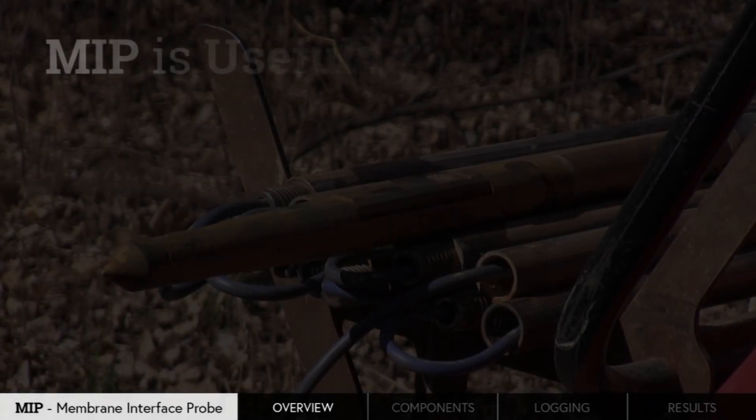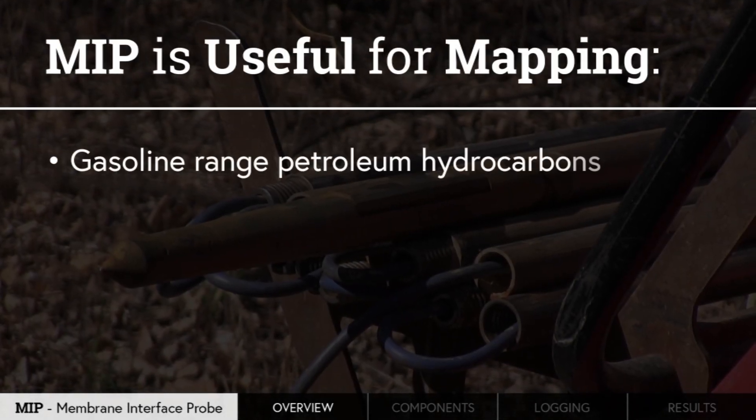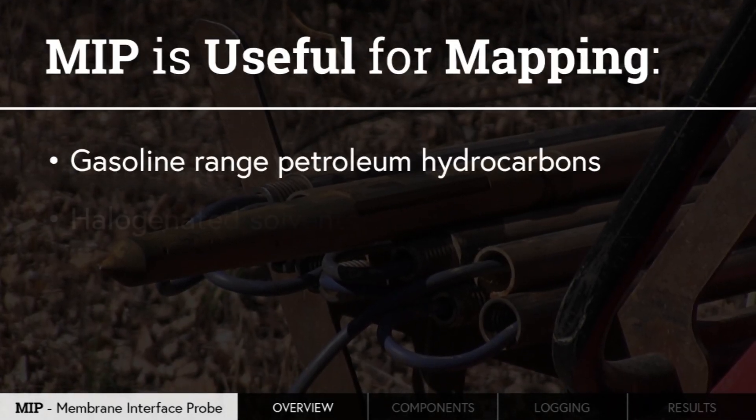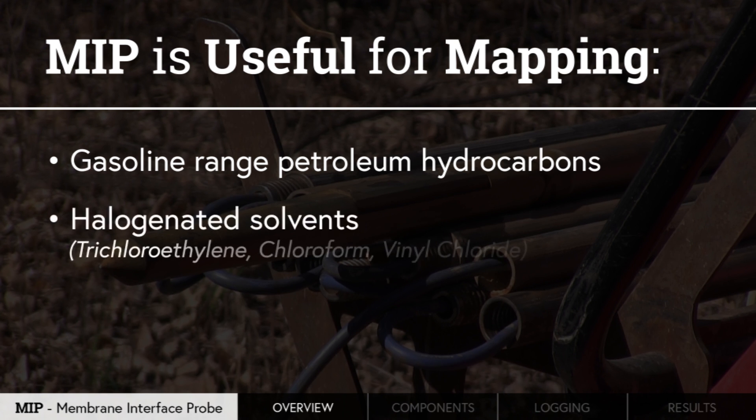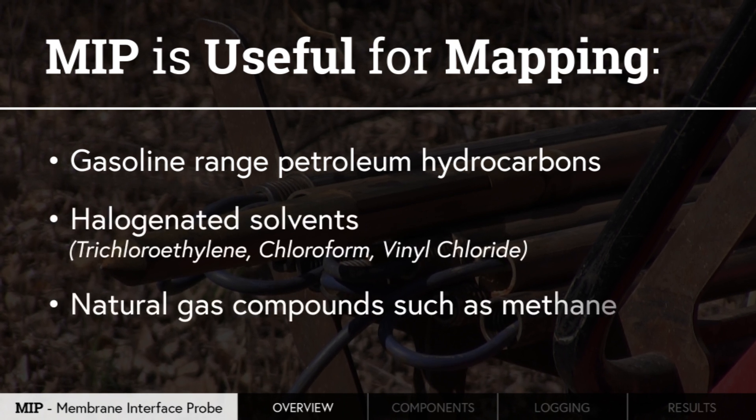The MIP is useful for mapping gasoline range petroleum hydrocarbons, halogenated solvents, and natural gas compounds such as methane.